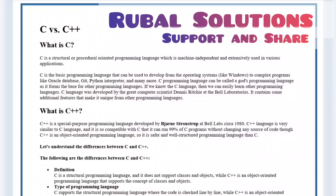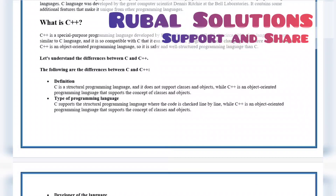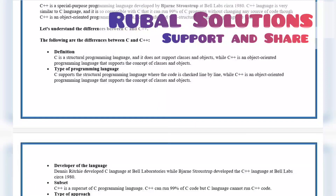Let's understand the difference between C and C++. The following are the differences between C and C++. First is the definition. C is a structural programming language and it does not support classes and objects, while C++ is an object-oriented programming language that supports the concept of classes and objects.